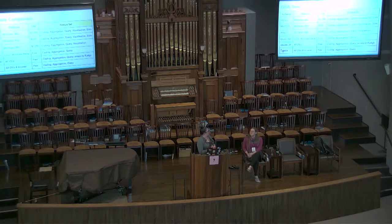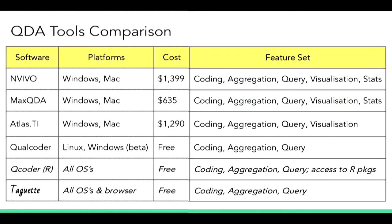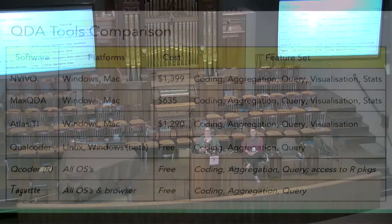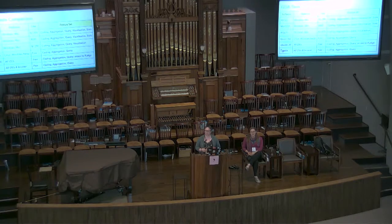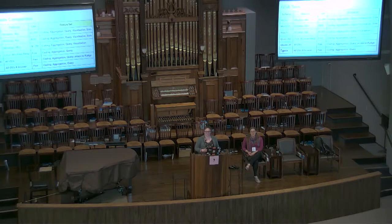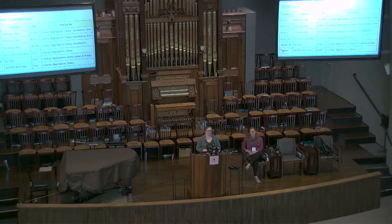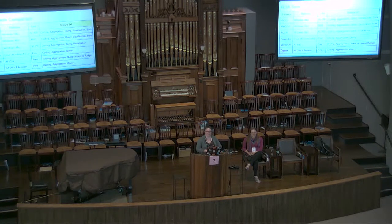The list varies a lot in terms of prices. NVivo, for example, which is one of the most well-used qualitative tools across disciplines, is about $1,400 for a license and it only works on Windows and Mac. The cheapest tool is $15 a month and uses Flash — and it is not going to stop using Flash.